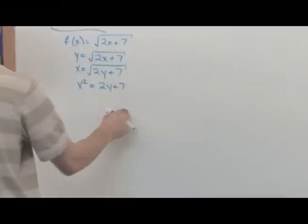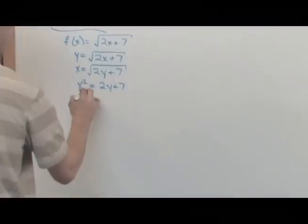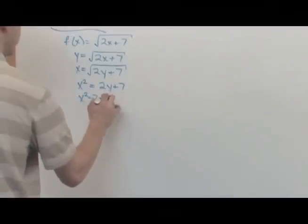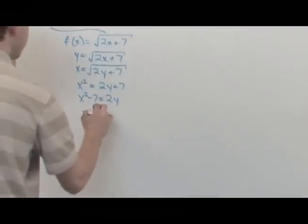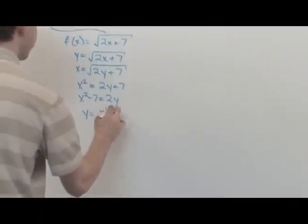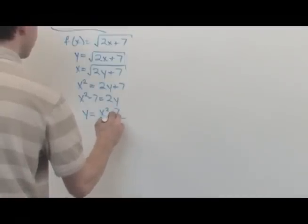Okay, now I'm going to move the 7 over here. x squared minus 7 is equal to 2y. Okay, and finally solving for y. y is equal to x squared minus 7. x squared minus 7 over 2.